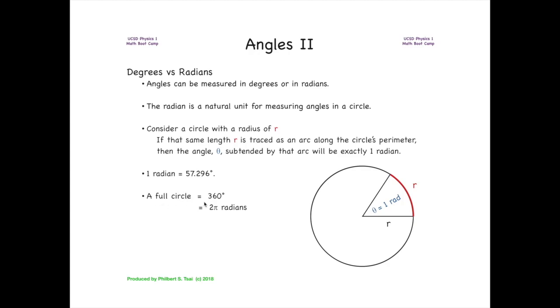A full circle, which by definition is 360 degrees, therefore works out to be exactly two pi radians.